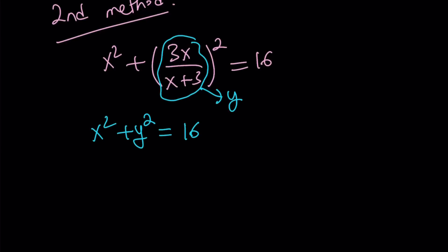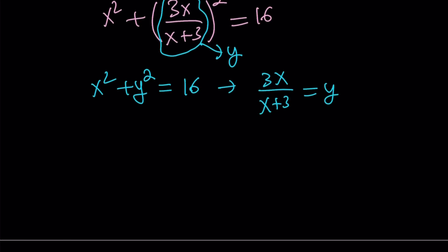And as you know, this is the equation of a circle whose center is at the origin. But not only that, this has another implication. We get the following. Of course, we should be able to take advantage of this. If you cross-multiply, you get 3x equals xy plus 3y.